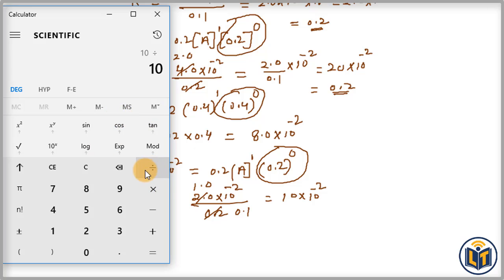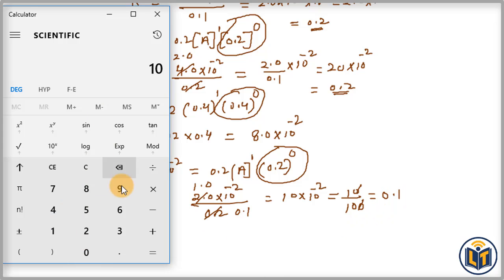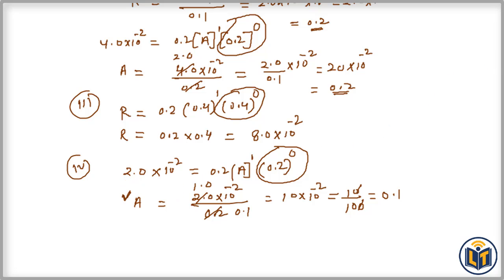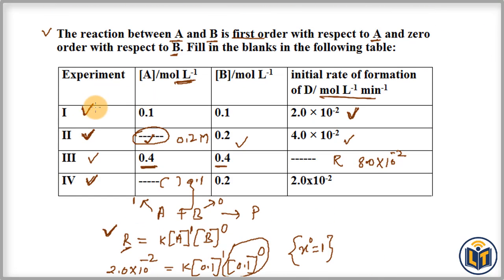The concentration of reactant A for the fourth experimental data is 0.1 mol/L. So to summarize: first we determined the rate constant K using the rate law expression, then we used that K value to find unknown concentrations of reactants, and also calculated the rate of reaction when concentrations of both reactants were given.